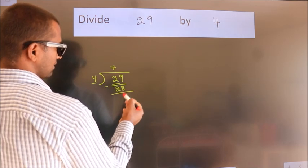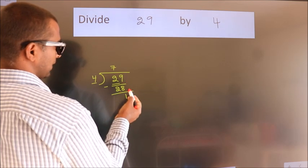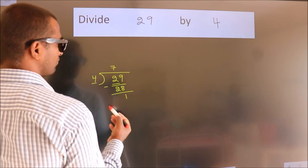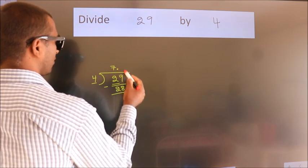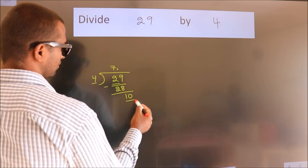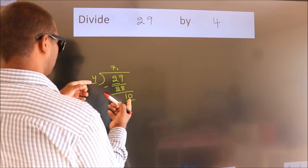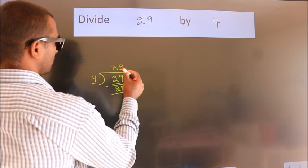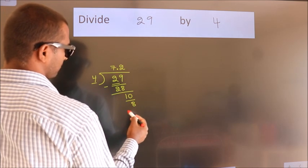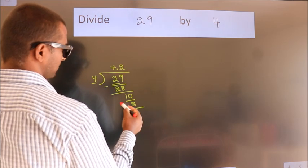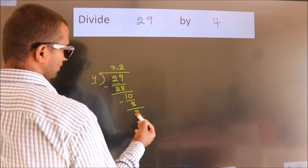After this, no more numbers to bring down, so what we do is we put a dot and take zero. So 10. A number close to 10 in the 4 table is 4 times 2 equals 8. Now we subtract and we get 2.